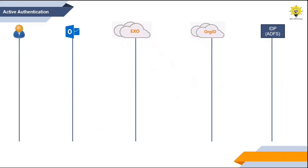Now let's understand how active authentication works in ADFS. Active authentication is used by Outlook clients and ActiveSync clients. Active authentication is processed by the Trust/MEX endpoint, which handles metadata exchange. In this example, a user is trying to create a new Outlook profile and his domain is federated. In passive authentication we had EvoSTS, but in active authentication, requests are handled by org ID, and IDP is the ADFS server of the organization this user belongs to.